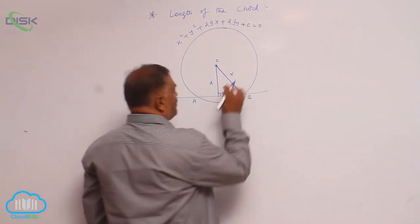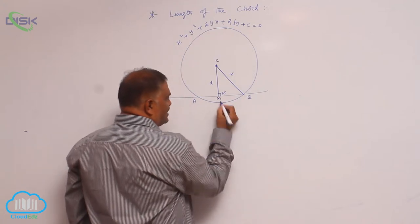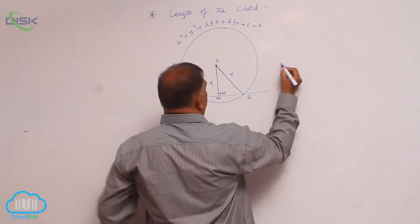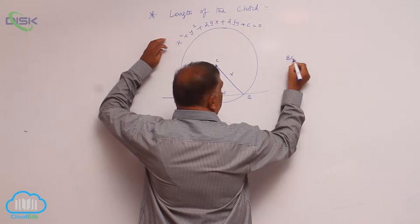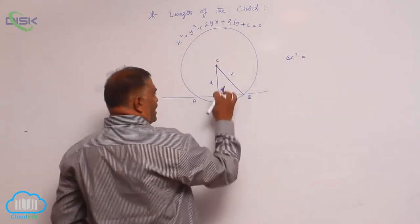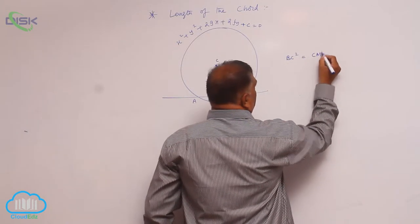Now from this right angle triangle, let us say this is M. BM square, that is BC square, is equal to CM square plus MB square.